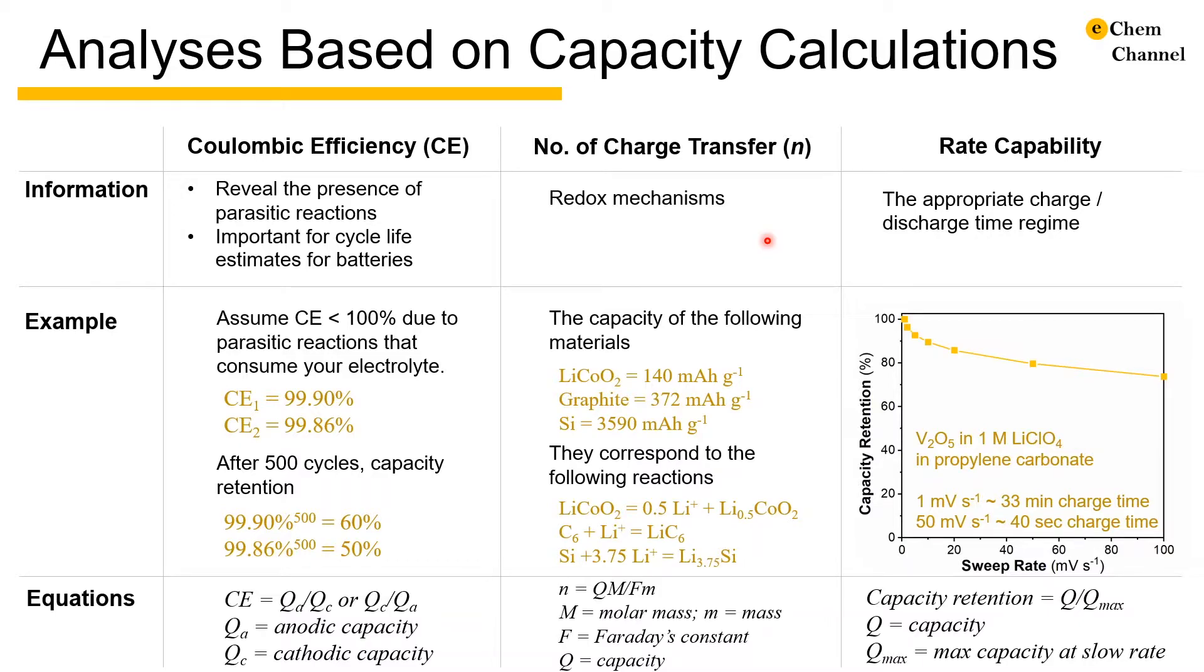For example, the reversible capacity of lithium cobalt oxide is 140 mAh per gram. It corresponds to 0.5 lithium per formula unit and half of the cobalt going through a 4+ to 3+ reduction.